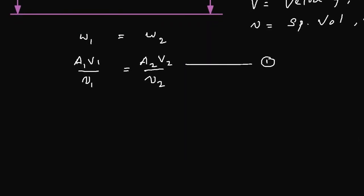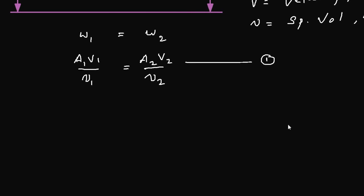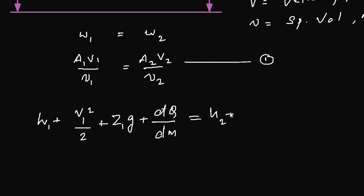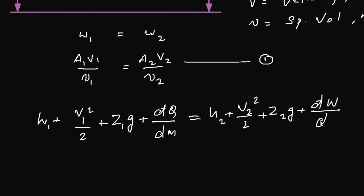For the energy balance, I'm starting from the final equation so it's easy to understand. The steady flow energy equation is: h1 + V1²/2 + z1·g + dq/dm = h2 + V2²/2 + z2·g + dw/dm.